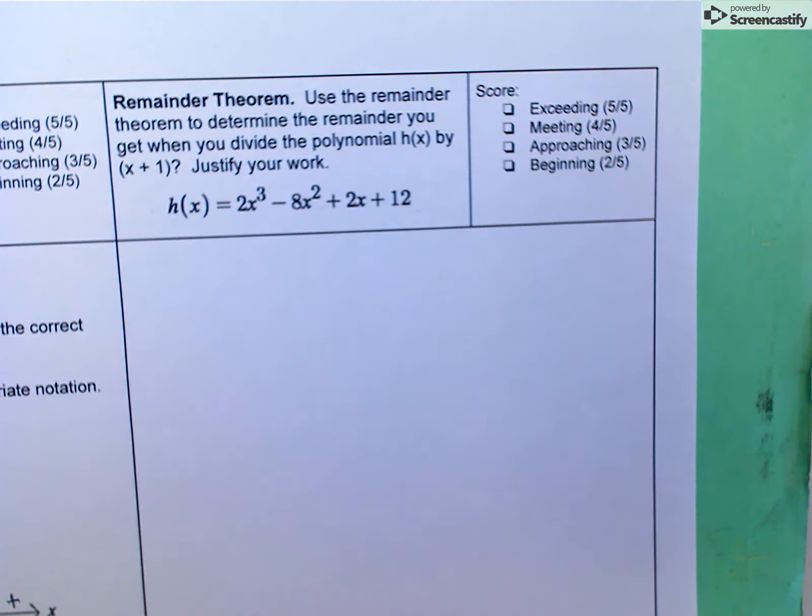I'm going to start by acknowledging that negative 1 is the value of x that causes this expression to be 0. So according to the remainder theorem, if I plug negative 1 into this function, I should get the remainder—the value I would get as a remainder if I did the long division.